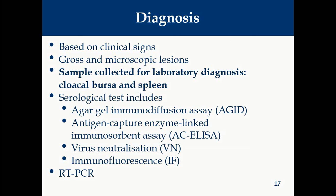Diagnosis can be made on the basis of clinical signs, though these are only suggestive. Gross and microscopic lesions are particularly suggestive of IBD — enlarged edematous hemorrhagic bursa is considered pathognomonic. For confirmation, cloacal bursa and spleen should be collected, and serological tests like agar gel immunodiffusion, antigen-captured ELISA, virus neutralization tests, immunofluorescence, or RT-PCR can confirm IBD. This is all about infectious bursal disease — thank you.